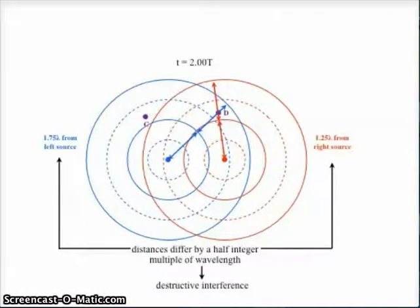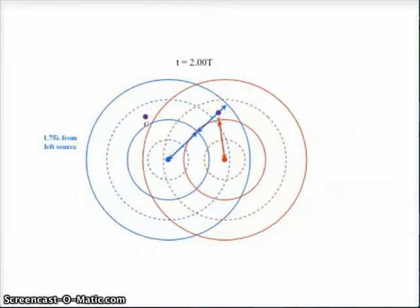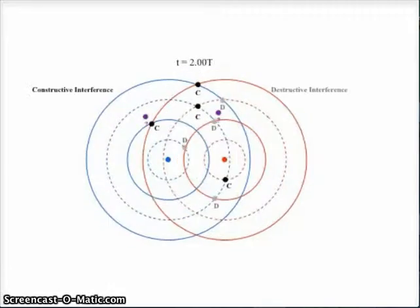By measuring those distances from the wave source to the location, depending on how much those distances differ, I can determine if that location will be constructive or destructive interference. And in fact, if we go back to this diagram showing all of our locations,